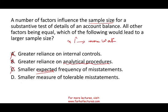By process of elimination, D is the answer: smaller measure of tolerable misstatement. You have to be careful here because it says smaller. A smaller tolerable misstatement means you don't have a lot of tolerance for misstatement. Therefore, if you don't have tolerance for misstatement because the account balance is important, you have to do more work and increase your sample size. But if you can tolerate more misstatement, then you don't have to do as much work — although you may miss some mistakes, it's acceptable because you can tolerate greater misstatement.